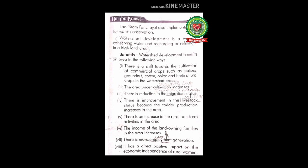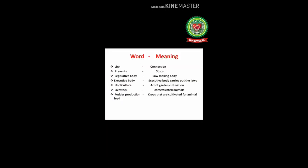Let's read the benefits of watershed development. Number one: there is a shift towards the cultivation of commercial crops such as pulses, groundnut, cotton, onion and horticultural crops in watershed areas. Shift is a technique of cultivation that preserves soil fertility by field rotation. Commercial crops are those cultivated for the purpose of sale. Horticulture means the art of garden cultivation.